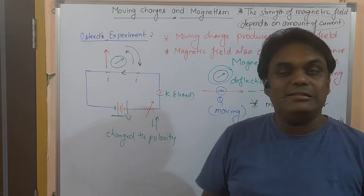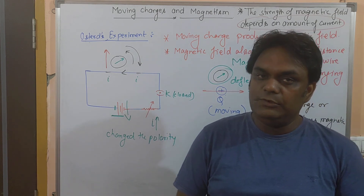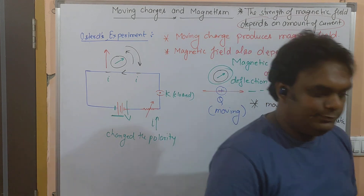So this is the basic introduction to the magnetic field due to a moving charge — a magnetic field is produced due to a moving charge. Hope this concept is clear. If you have any doubts, please feel free to ask. Thank you.